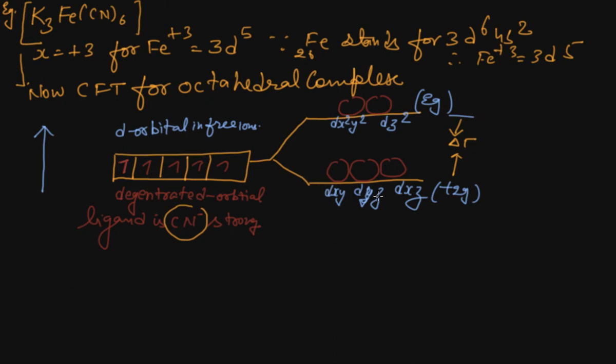Now we have to distribute the electrons. If it is a strong ligand, then one, two, three - all will be paired here. How many unpaired electrons? One. So n equals 1. You can put it in the spin-only formula and get its magnetic property: spin-only formula equals square root of n(n+2) Bohr magnetons. Putting the value of n gives the magnetic moment in Bohr magnetons.